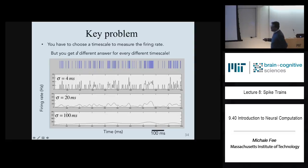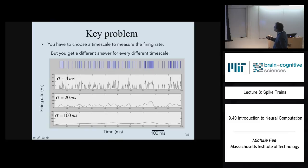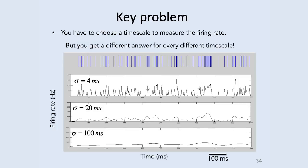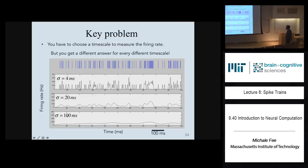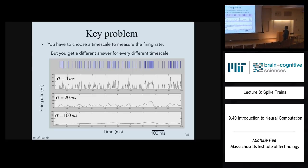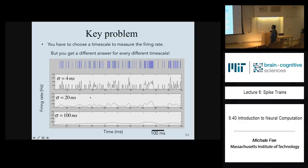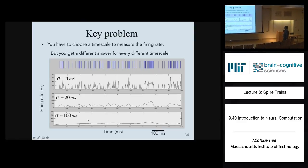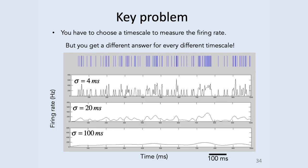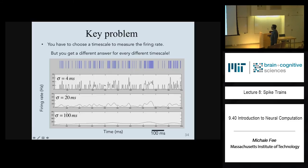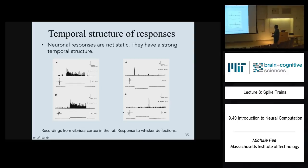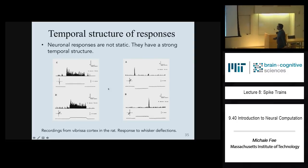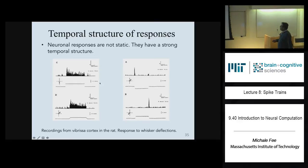The answer you get for firing rate as a function of time depends very strongly on the width of the kernel you choose. With a Gaussian kernel of sigma = 4 milliseconds, you get a very peaky estimate where each spike produces a small peak. The right kernel size really depends on the experiment, because neural spike trains have widely different temporal structure.